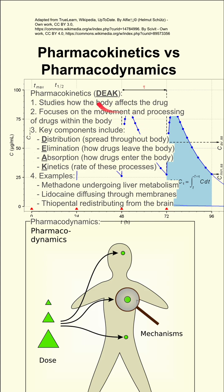One way to remember the components of pharmacokinetics is with the acronym DEEK, D-E-A-K, for distribution, elimination, absorption, and kinetics. DEEK is also a mnemonic to help remember the fat-soluble vitamins, vitamin D, E, A, and K.